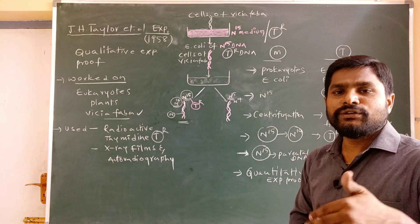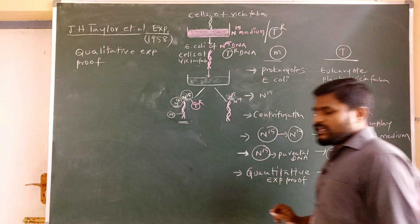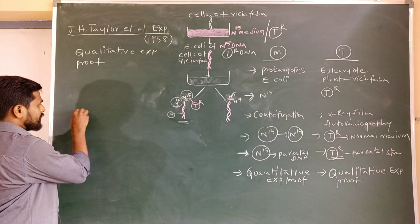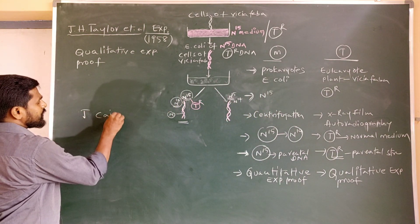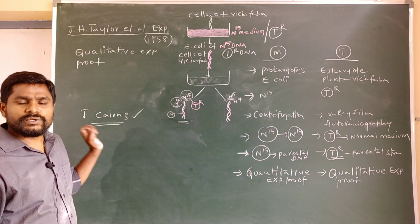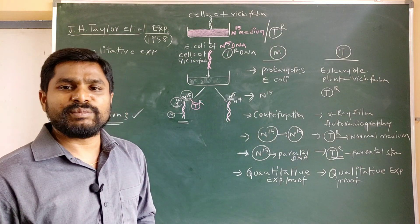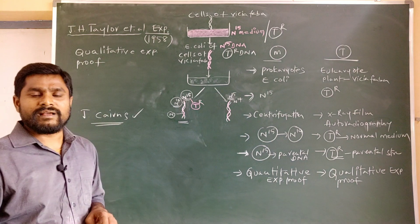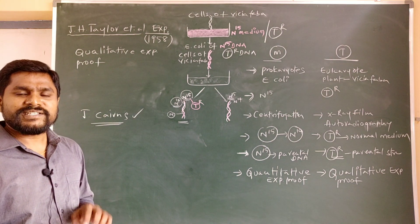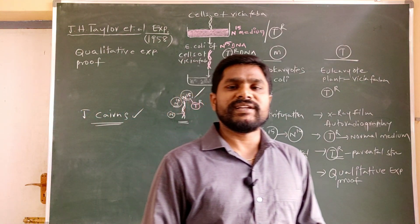Lastly, J. Cairns was a scientist who developed a technique for visualization of the semi-conservative model of DNA replication in E. coli cells by using microscopy and auto-radiography. This concludes the experimental proof for the semi-conservative model of DNA replication in both prokaryotes and eukaryotes.